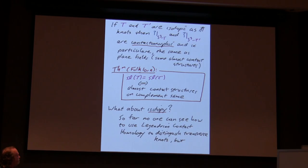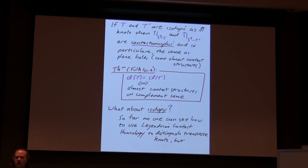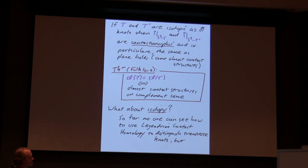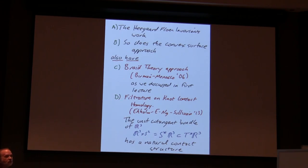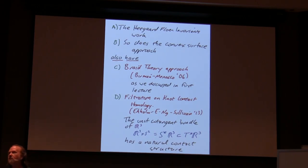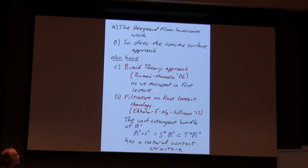So let's think about the isotopy problem for transverse knots. Legendrian contact homology — people have spent years trying to get it to tell you anything about transverse knots, and so far it doesn't really seem to tell you much. People come up with all sorts of great tricks and then prove that those great tricks don't work. What can you do? Well, it turns out the Heegaard Floer stuff actually gives you transverse invariants and you can distinguish transverse knots that way. Also the convex surface approach works. Back in 2006, Birman and Menasco used braid theory to distinguish transverse knots — they came up with a Markov theorem without stabilization, studying induced foliations on Seifert surfaces for the knot.